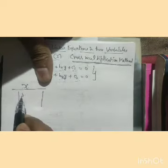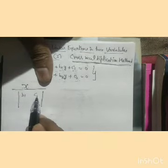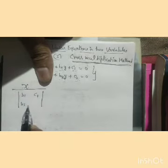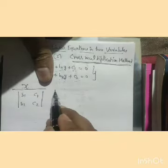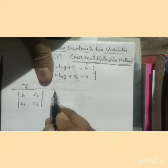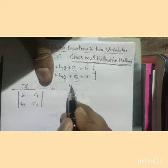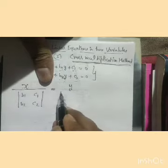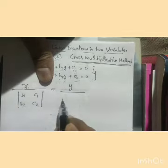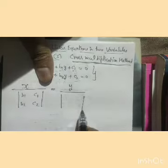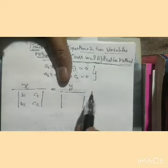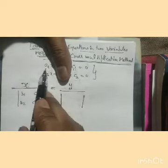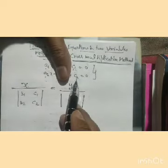Below x we write B1, C1, B2, C2. Then write equal to y. Below y we close the coefficient of y — we have A1, A2, C1, C2.